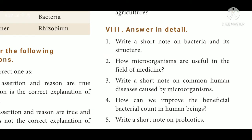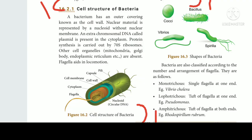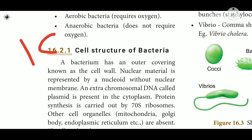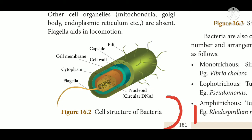Roman numeral 8, Answer in detail. Question 1: Write a short note on bacteria and its structure. Answer: A bacterium has an outer covering known as the cell wall. Nuclear material is represented by a nucleoid without a nuclear membrane. An extra-chromosomal DNA called plasmid is present in the cytoplasm. Protein synthesis is carried out by 70S ribosomes. Other cell organelles such as mitochondria, Golgi body, and endoplasmic reticulum are absent. Flagella aids in locomotion.